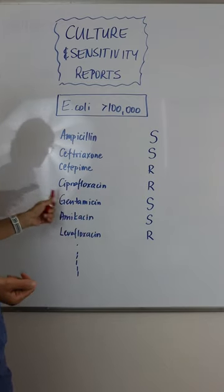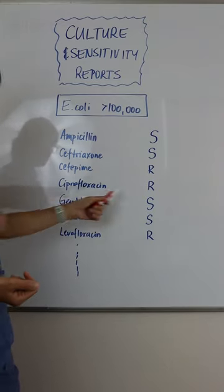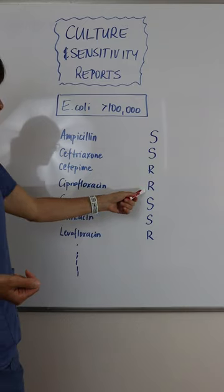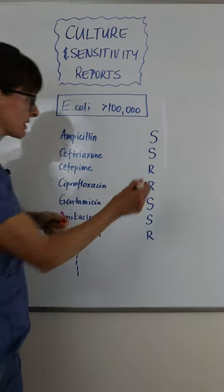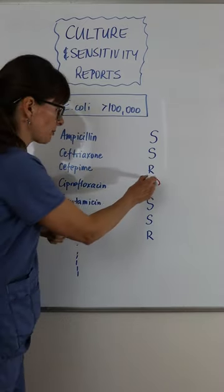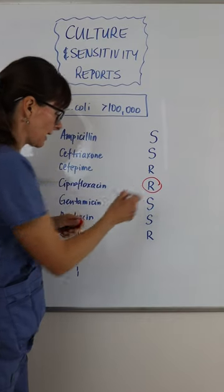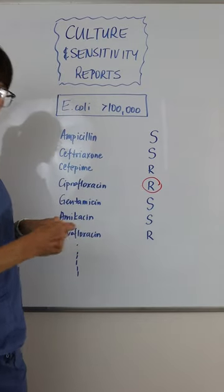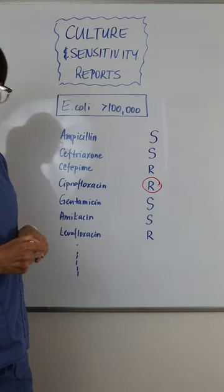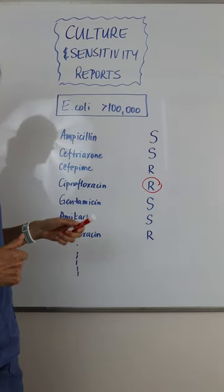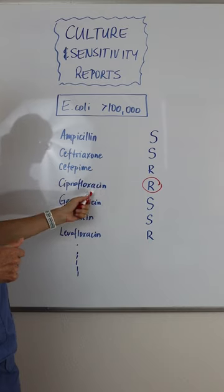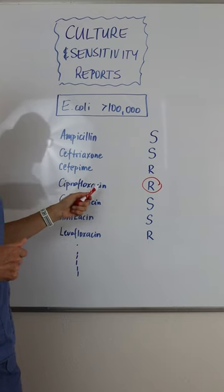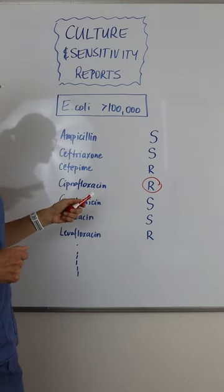So let's say the patient was started on Cipro, but now we know by their culture result that it is resistant to Cipro. So now what we need to do is notify the provider and let them know about this, because this antibiotic is not going to help our patient.